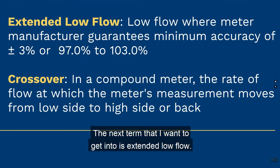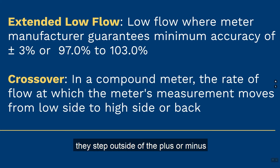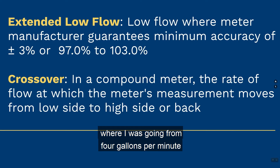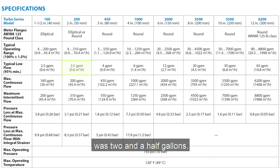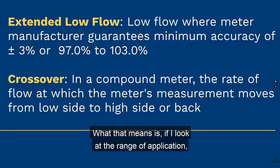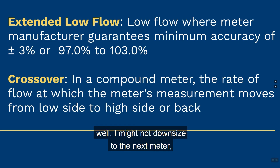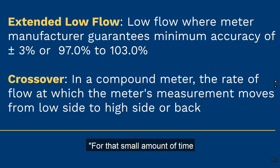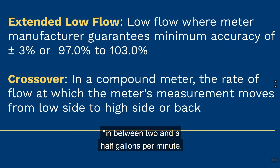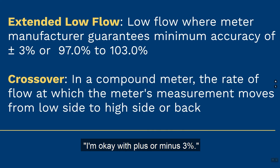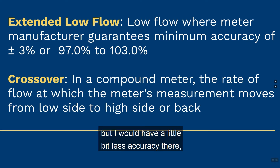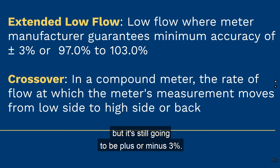The next term is extended low flow. This is a number that manufacturers provide stepping outside of the plus or minus one and a half percent guarantee. For example, if a meter's operating range is four gallons per minute up to 310 gallons per minute, and the extended low flow is two and a half gallons per minute, that means if the customer occasionally flows between two and a half and four gallons per minute, I might not downsize to the next meter. I'd look at the extended low flow and accept plus or minus 3% accuracy for that small amount of time.